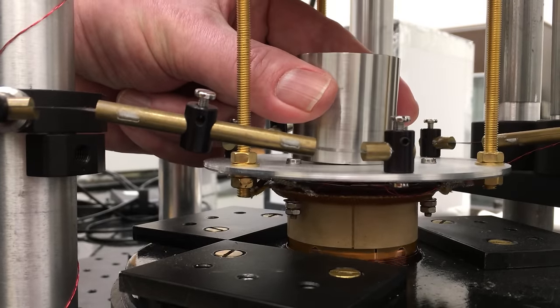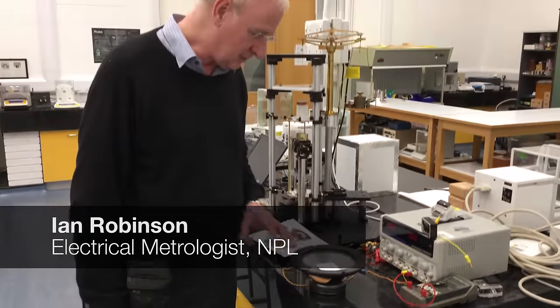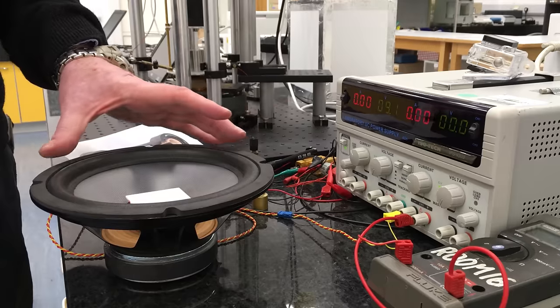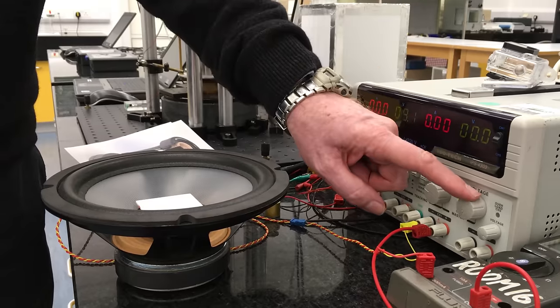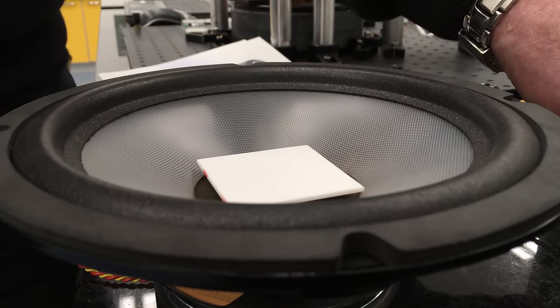The watt balance is an electrical way of measuring mass. This is a way of demonstrating simply how a watt balance works. We have a loudspeaker here, and if I pass a current through the coil of the loudspeaker you can see that the cone will move up and move down.